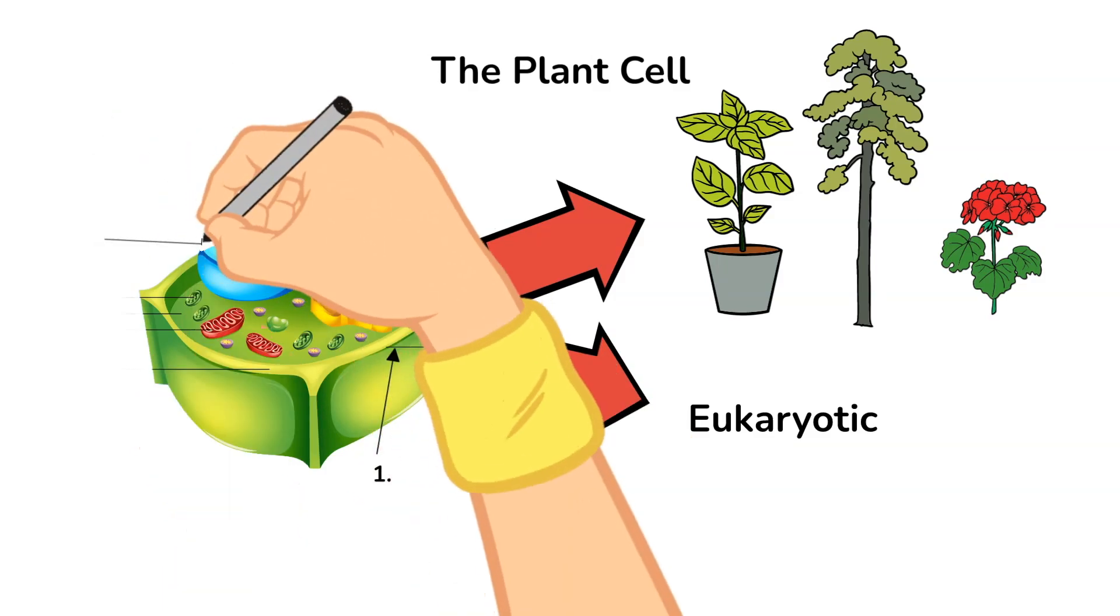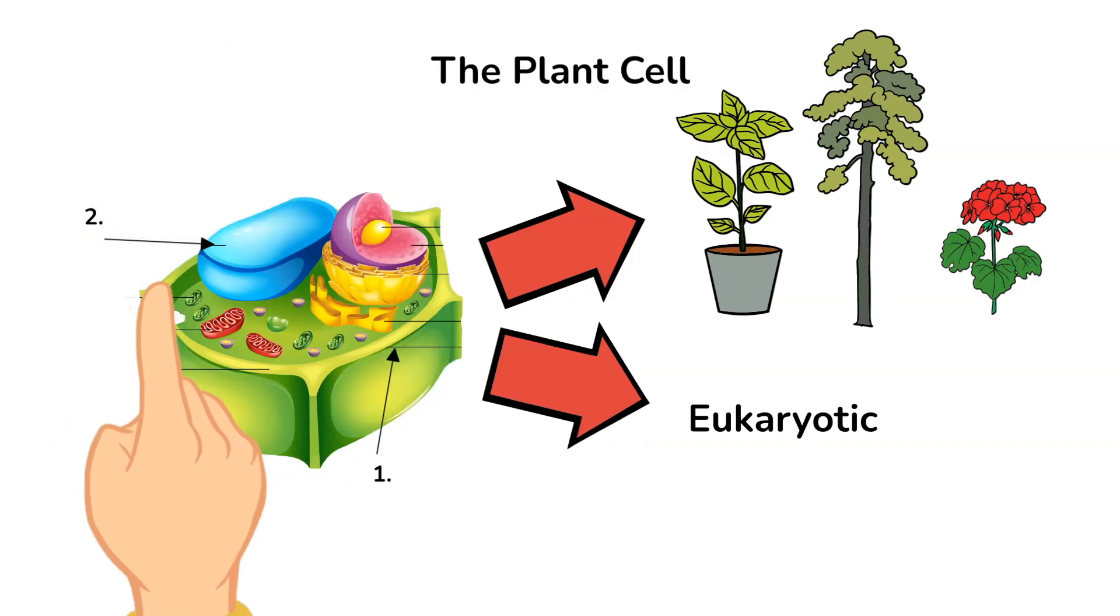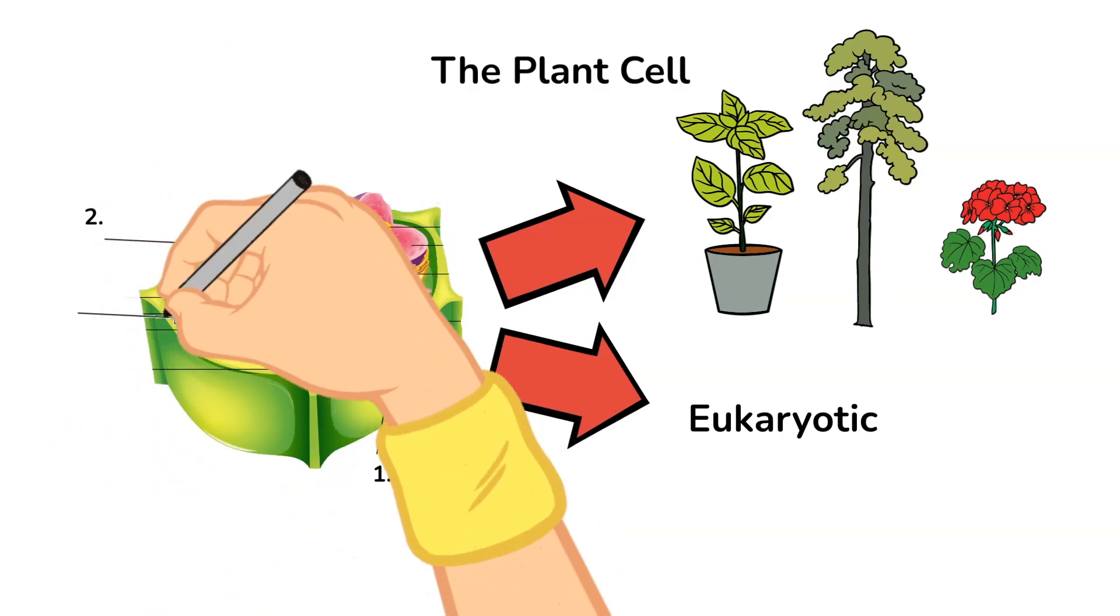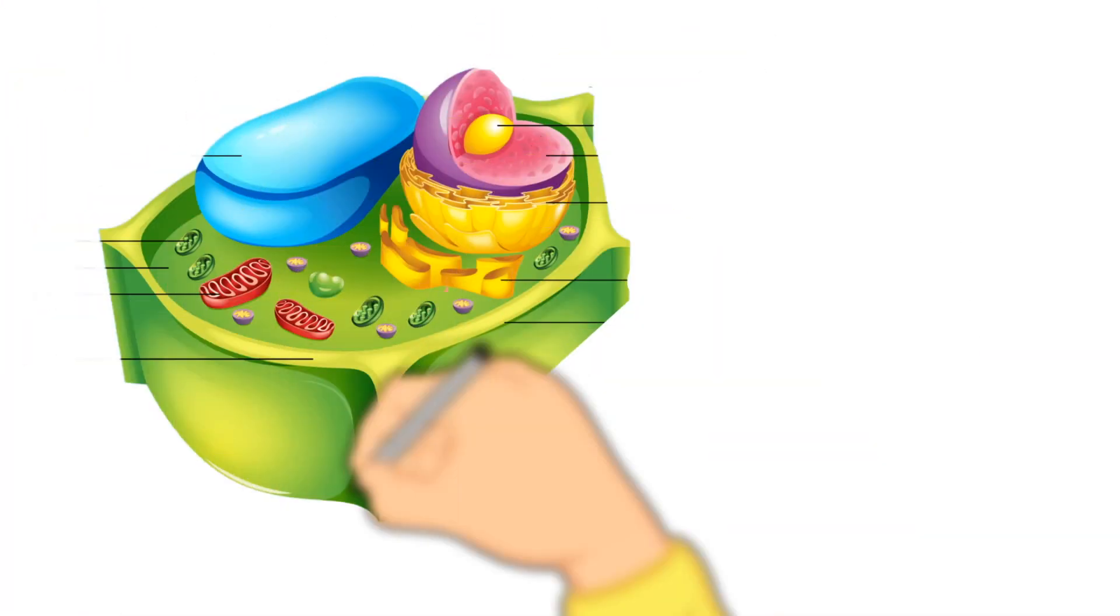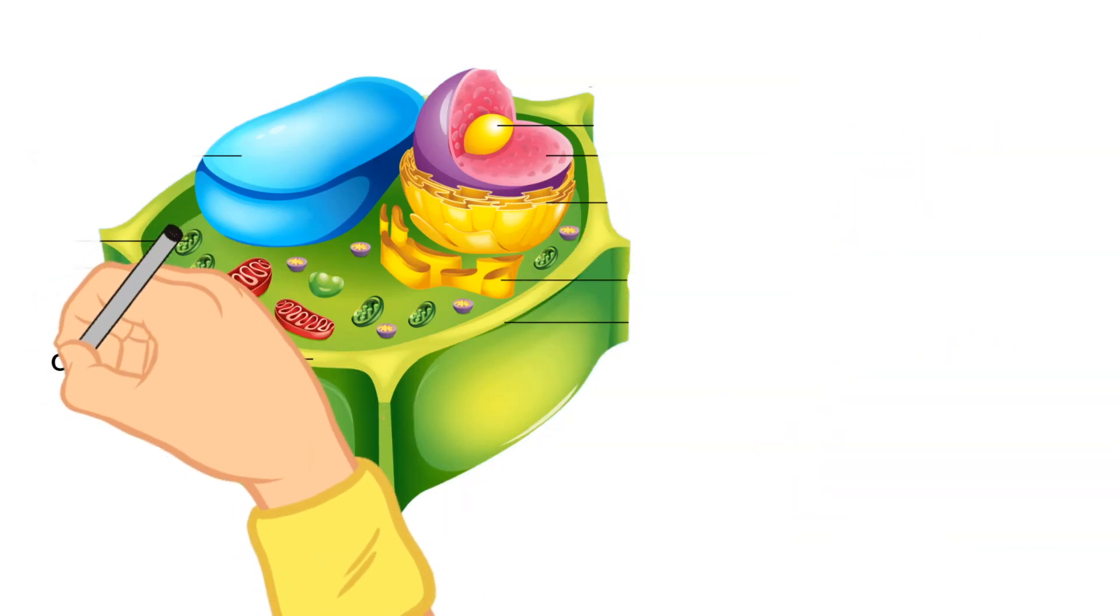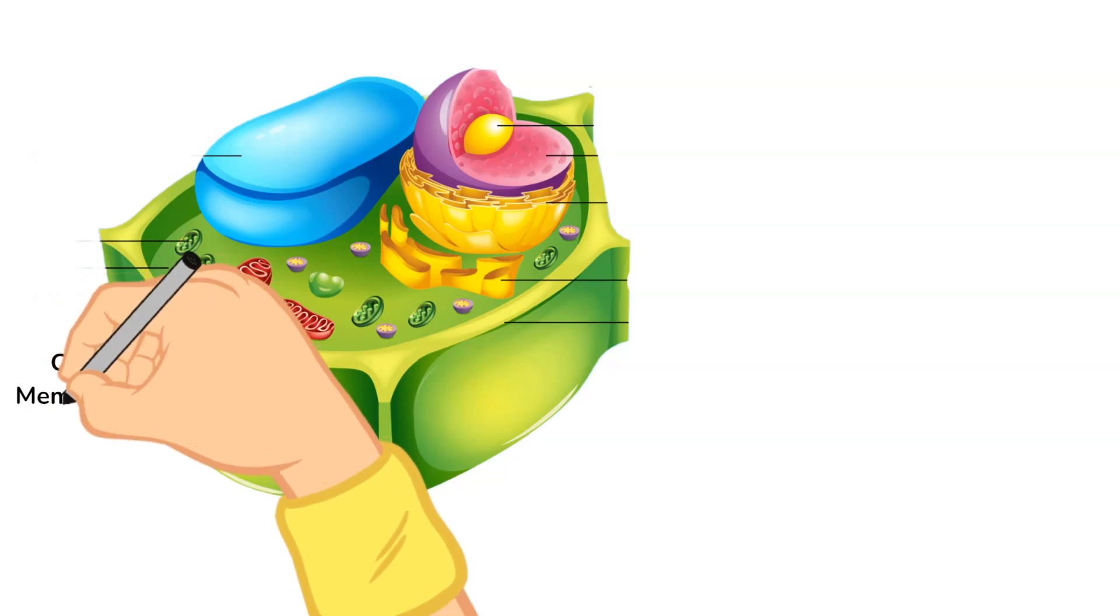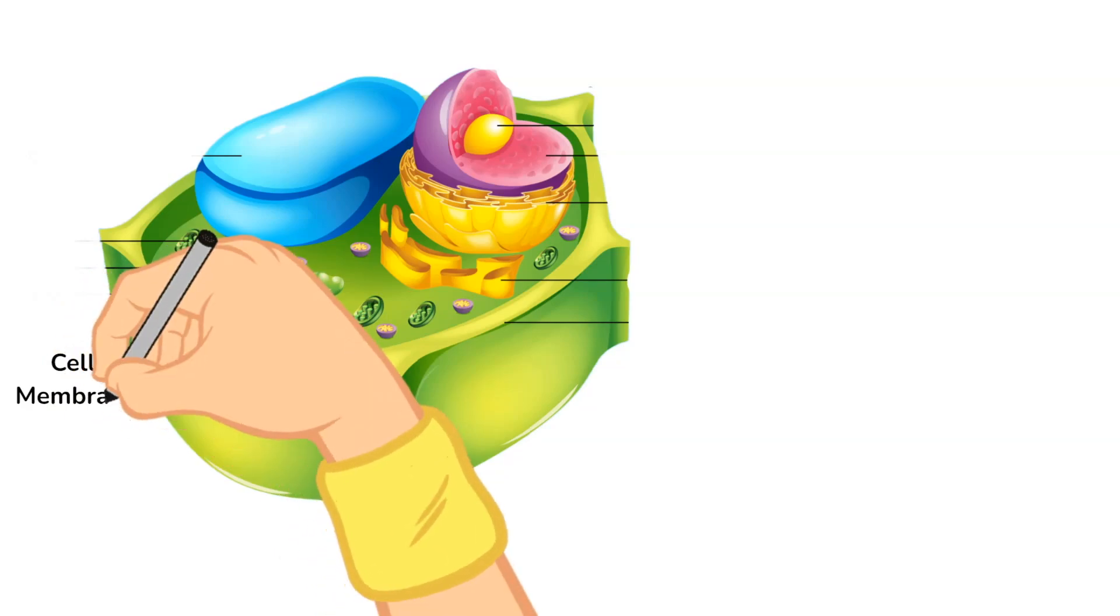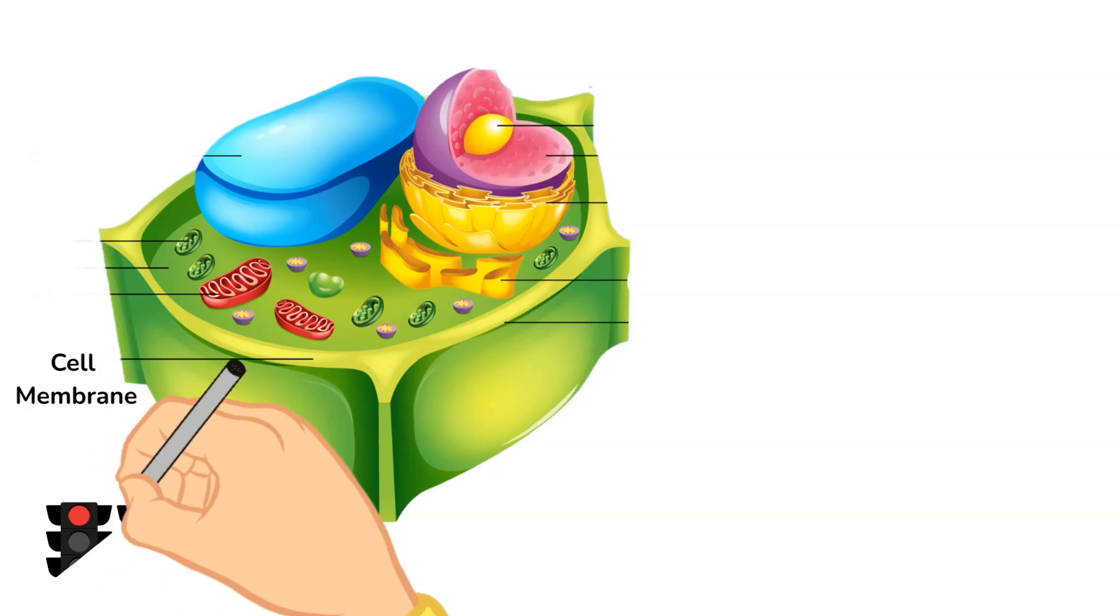So there are three parts of a plant cell that I want to narrow in on that are different than an animal cell. We know that both animal and plant cells both have a cell membrane. And remember, the cell membrane separates the outside of the cell from the inside of the cell. It can also help filter things in and out of the cell and keep things in the cell or keep things out of the cell.